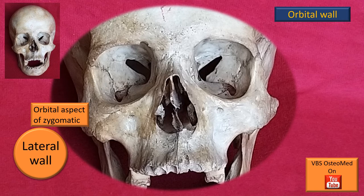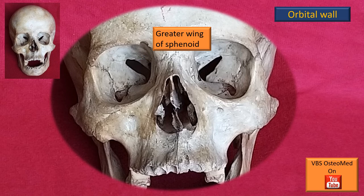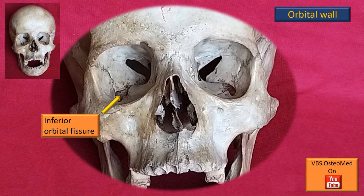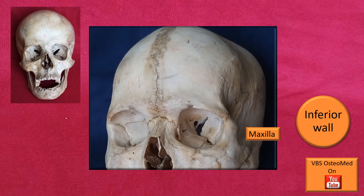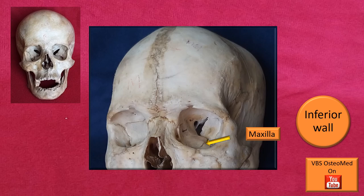The lateral wall has two bones: the orbital aspect of the zygomatic bone, and more posteriorly the greater wing of the sphenoid bone. The inferior orbital fissure is located roughly at the junction of the lateral wall and the floor. The inferior wall is largely the maxilla — the orbital plate of the maxilla — and, as seen earlier, has the infra-orbital groove leading anteriorly to the infra-orbital foramen. This floor separates the orbital cavity from the maxillary sinus, which is right below the orbit in this location.